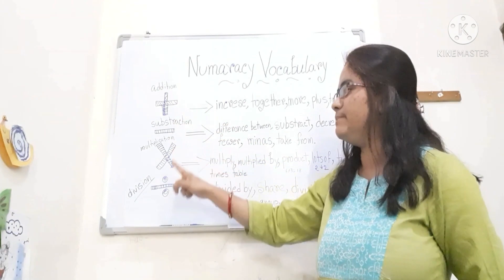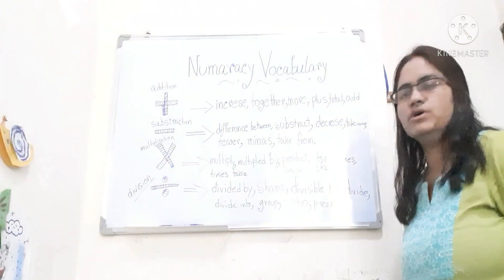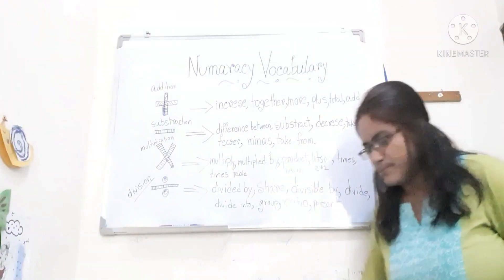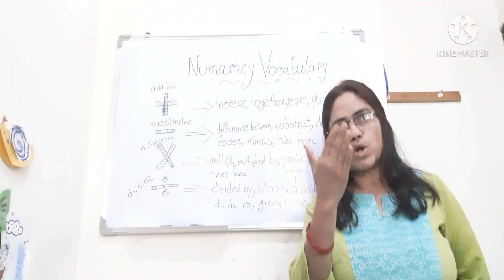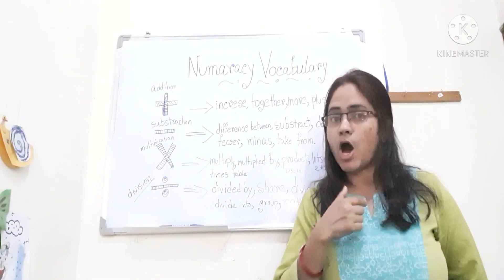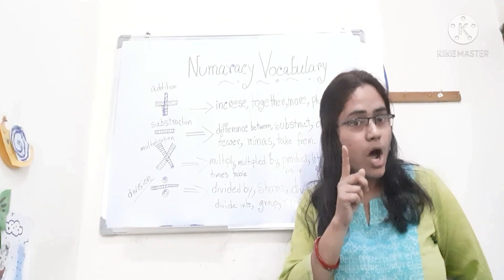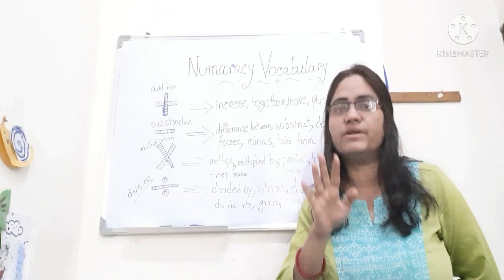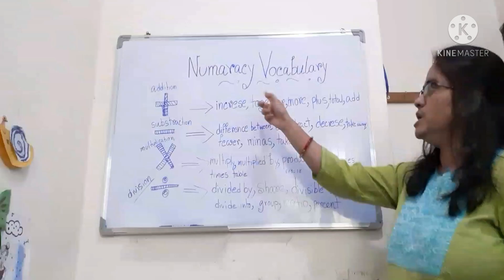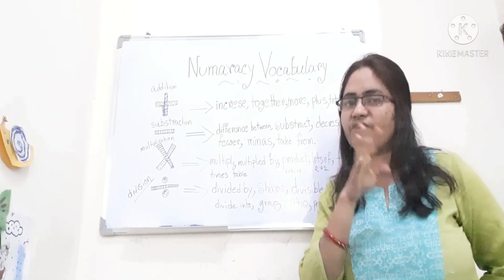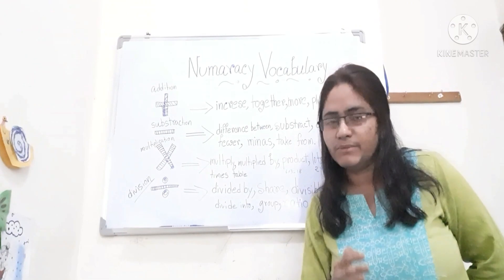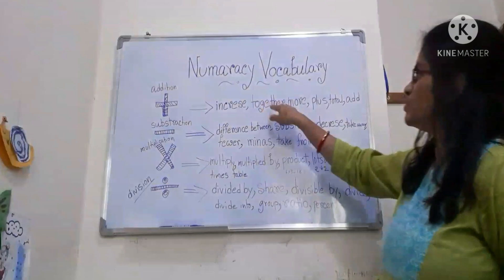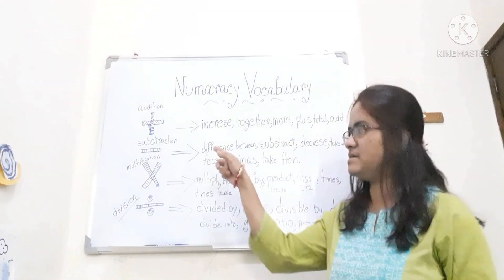Today I will discuss four symbols: addition, subtraction, multiplication, and division. In the case of addition, the words we are using are: increase, together, more, plus, and total. Suppose I have five chocolates with me and again I bought five more chocolates from the shop. How many chocolates altogether with me? Previously I had five chocolates and now I have five more — the quantity of chocolates has increased. So in that case we will do addition: increase, together, more, plus, total.